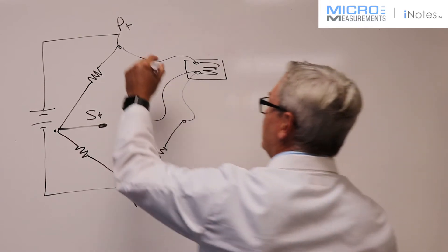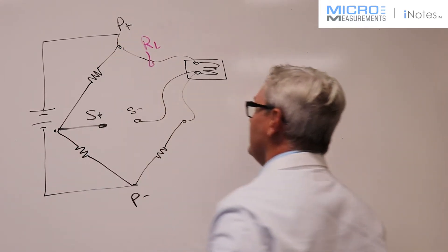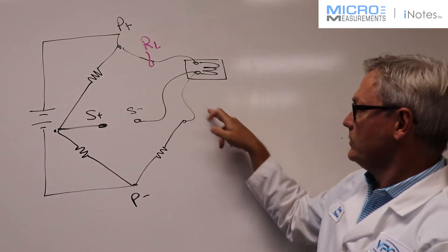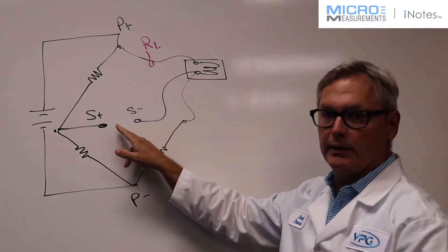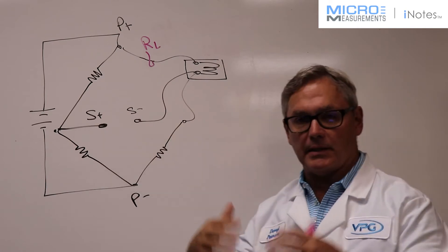And for us, that happens to be this one. I'm going to call it RL. RL is the one that we're worried about because these other two wires, this one connects down to a signal input into an amplifier or a strain indicator that typically has a high input impedance.